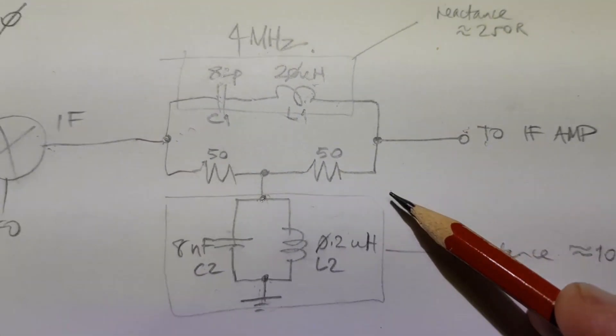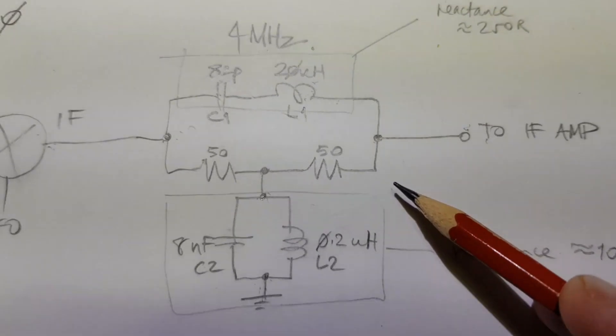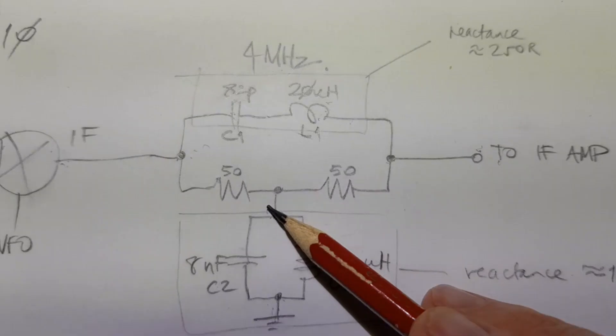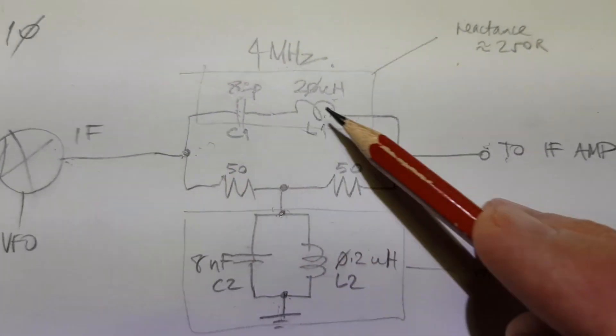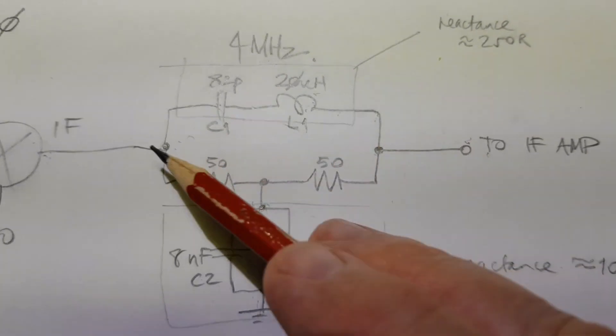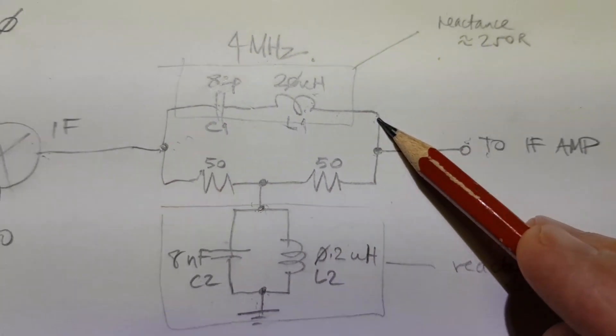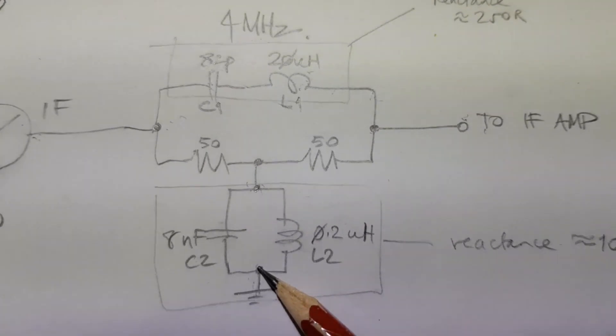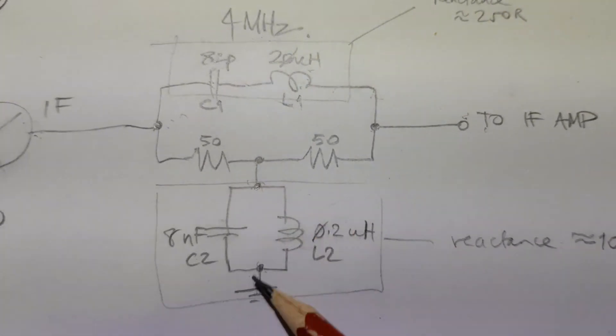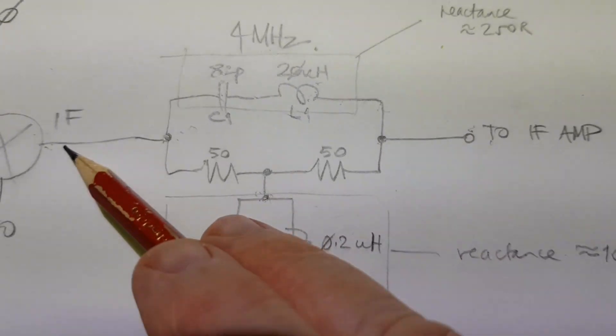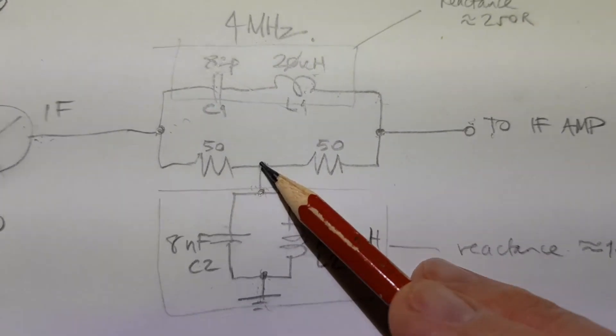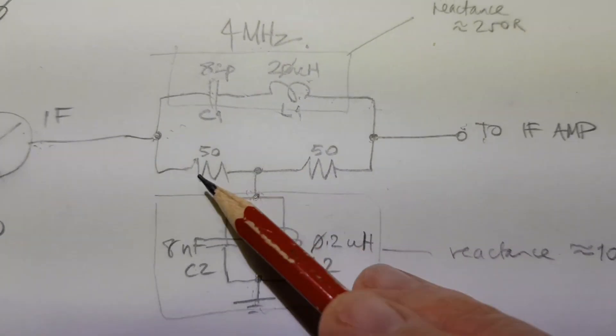But now if you think about frequencies away from the IF, so let's take twice the IF, let's take say 8 MHz. Now the series tuned circuit will exhibit a high impedance—in fact, consider it as almost being open circuit. The parallel tuned circuit will represent a low impedance to ground, so consider that to be almost a short circuit. So the IF port will see 50 ohms to ground for frequencies other than the IF through that 50 ohm resistor on the left.